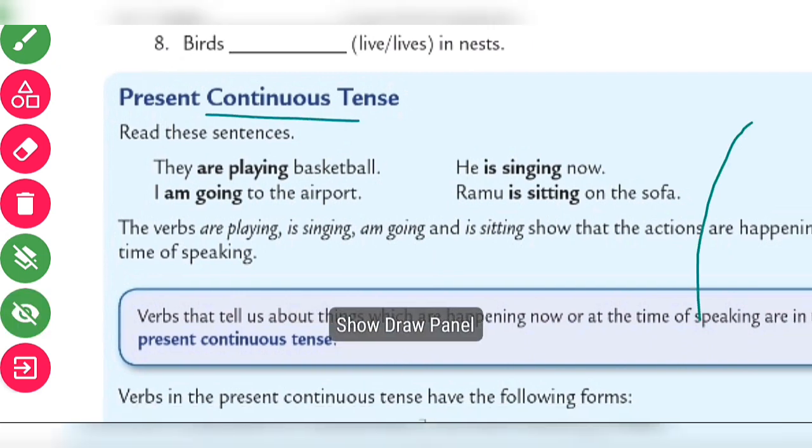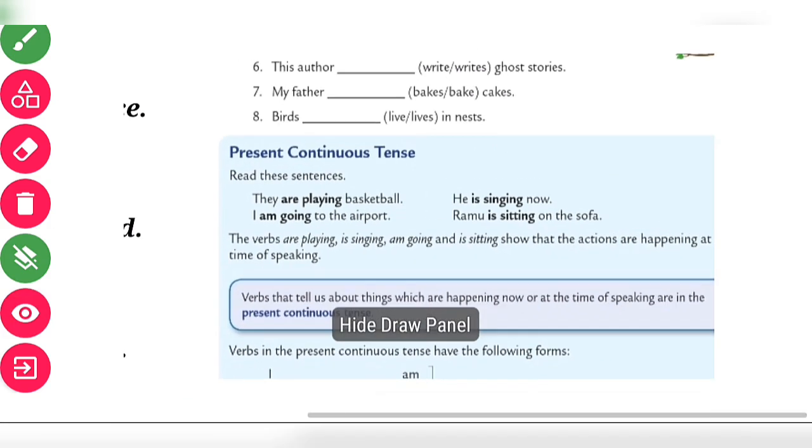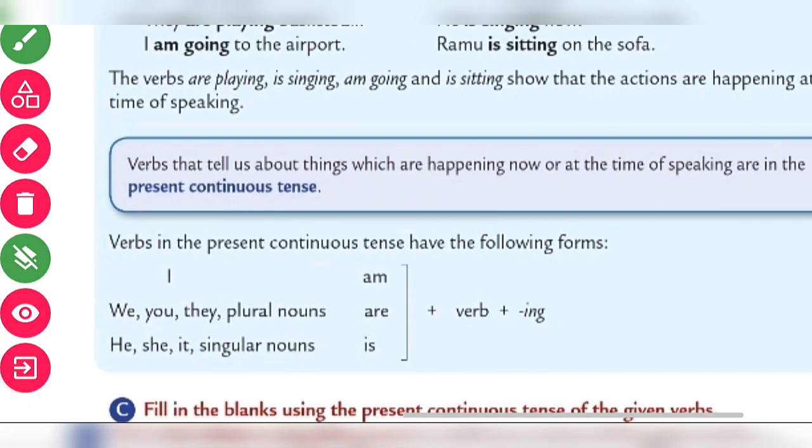Now present continuous tense. As the name continuous suggests, it means the action is continuing, the action is going on. It is not yet finished. They are playing basketball means they are still playing. I'm going to the airport means I'm on the way proceeding to the airport. He is singing now at the same time, Ramu is sitting on the sofa. So playing, is singing, am going, is sitting show that the actions are happening at the time of speaking.